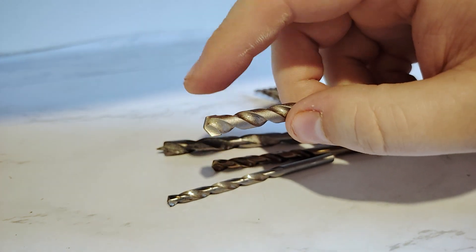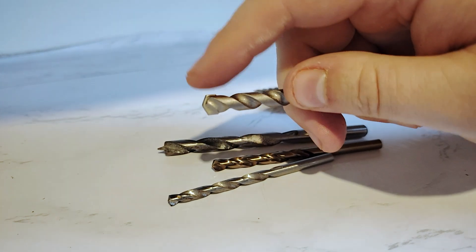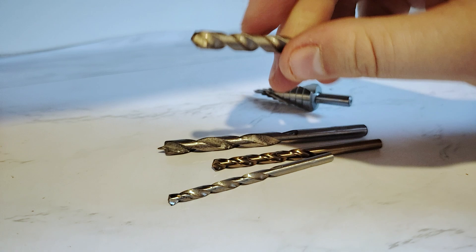And then this one here is a masonry drill bit, and you can tell that from the quite blunt extra piece of metal it's got on the end there, which is for helping it power through brick. But it's not sharp, so it's going to struggle with metal.